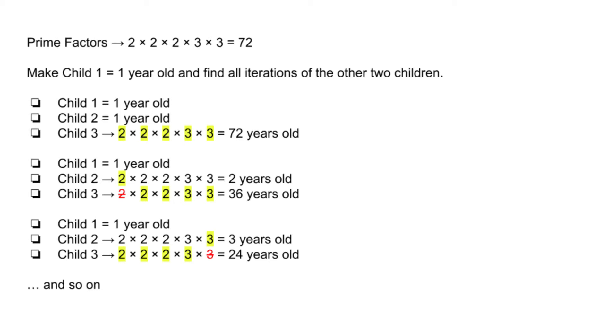We can also make child 2 a 1-year-old to begin with, therefore leaving child 3 to be 72, since the product of all 3 has to be equal to 72, and 1 times 1 times 72 equals 72. From these examples, the yellow highlighted numbers will indicate the number or numbers that are being used to calculate the specific child's age, and the red number, which is crossed out, will represent a number that we cannot use, since it was previously highlighted yellow and used on the previous child. Now that we got the first iteration, we now need to change the value of child 2.